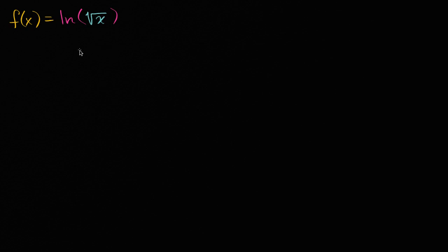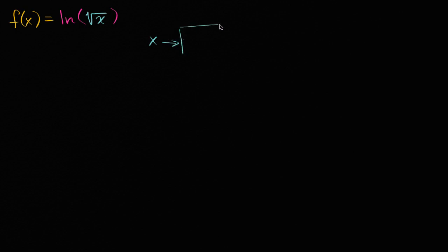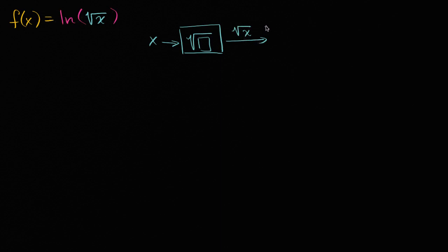The key here is to recognize that f can actually be viewed as a composition of two functions, and we can diagram that out. If you input an x into our function f, the first thing that you do is take the square root of it. So starting with some x, you input it and take the square root to produce √x. Then you take that square root and take the natural log of it — inputting it into another function that takes the natural log of whatever is input in.